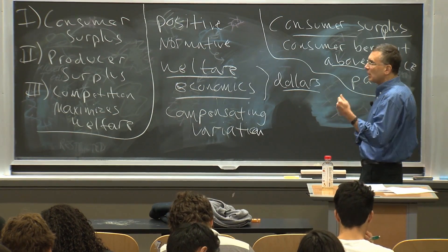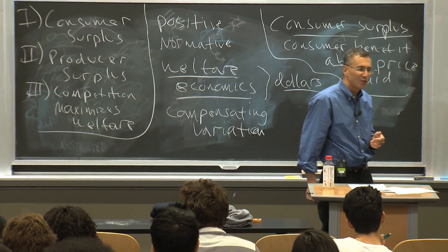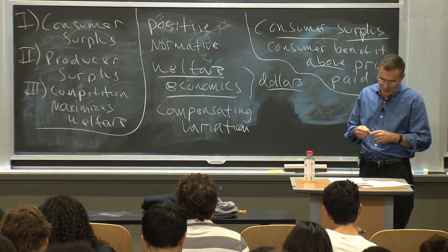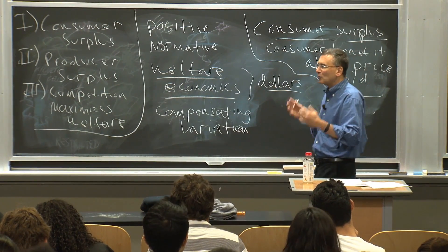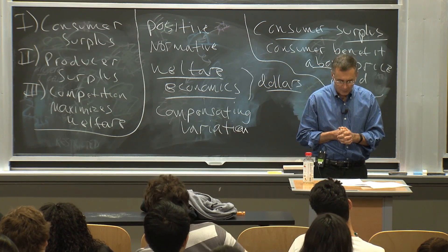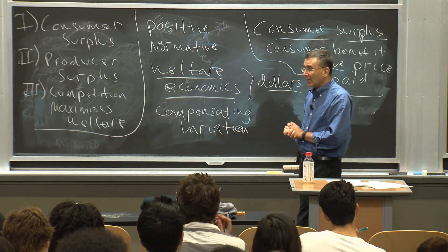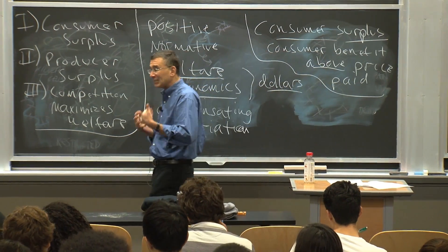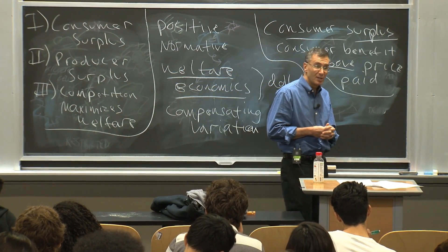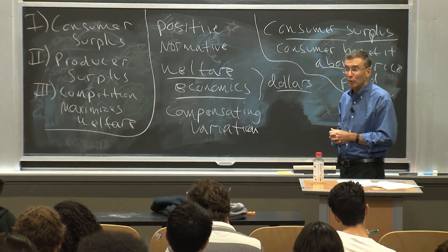To think about this, let's do the example of my daughter and Katy Perry songs. Suppose Katy Perry songs cost $1 — I know they're usually $1.29 on iTunes, but imagine they're $1; they're $1 on Amazon. Now let's say her willingness to pay from her demand curve for a Katy Perry song is $1, and she can buy it for $1. Then we say she has derived no consumer surplus.